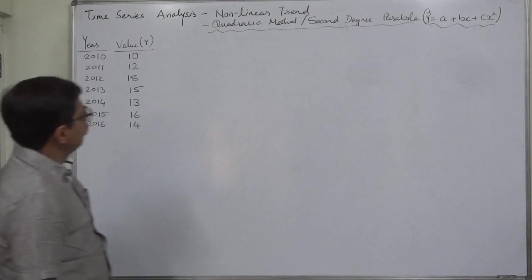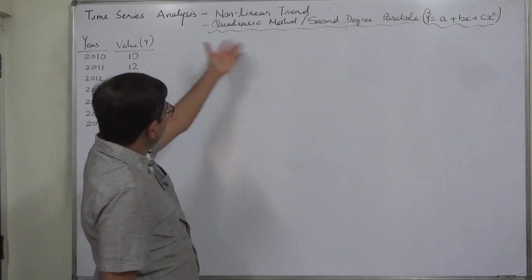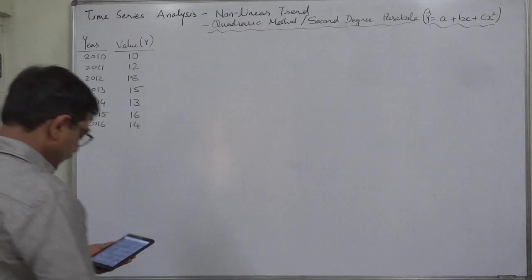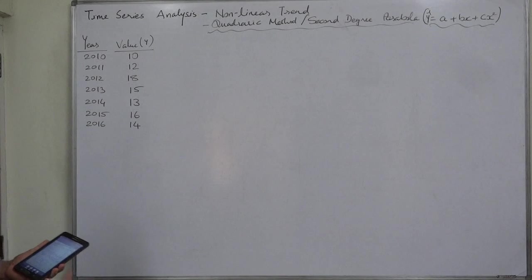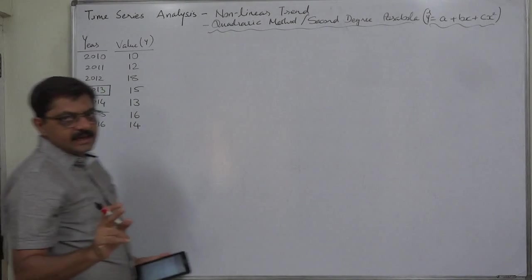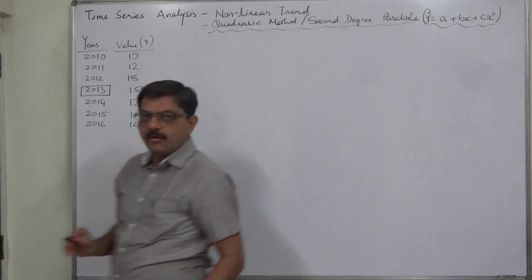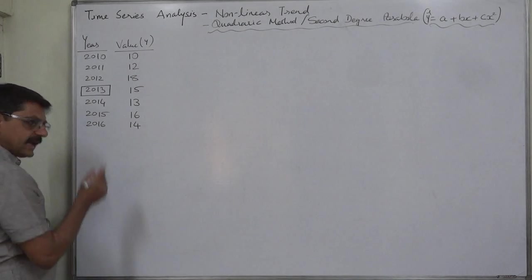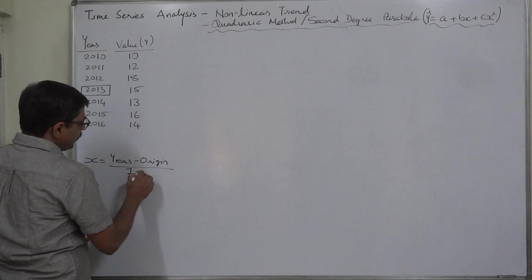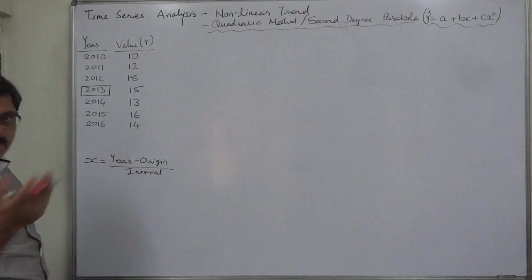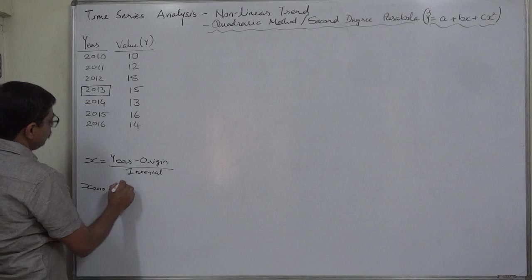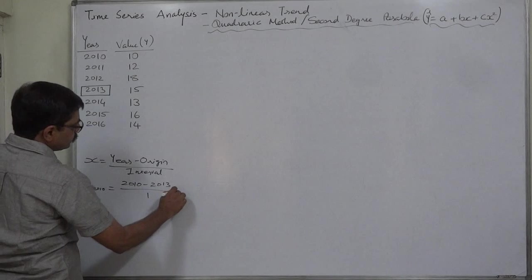The method of least squares is almost similar to the fitting of a linear trend, but because of the x squared term the process is now somewhat lengthier. The time series with us is of seven years. In case of an odd number of years or periods, we select the middle year as the origin. We have already selected origin as 2013. We can determine the value of x as: x equals year minus origin divided by interval. For example, for the year 2010, x will be 2010 minus 2013 divided by 1, so it will be minus 3.